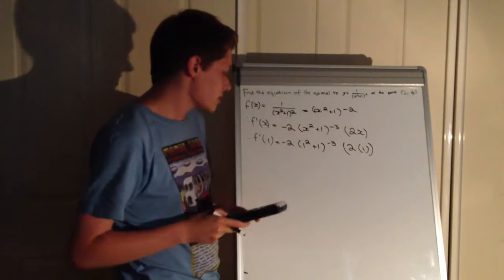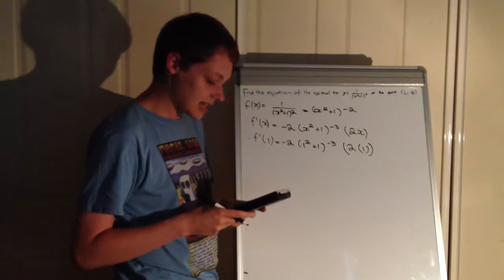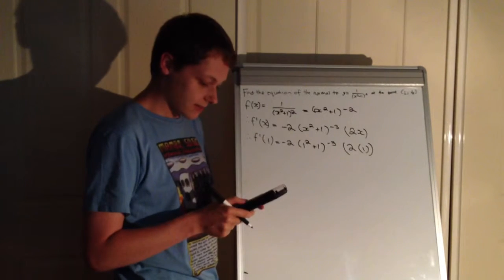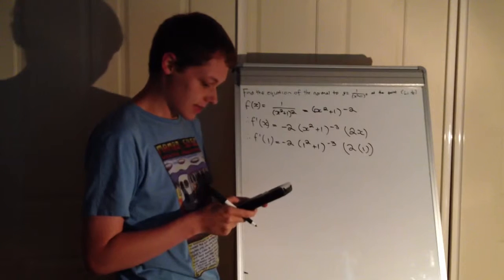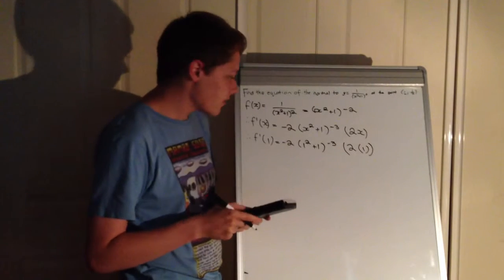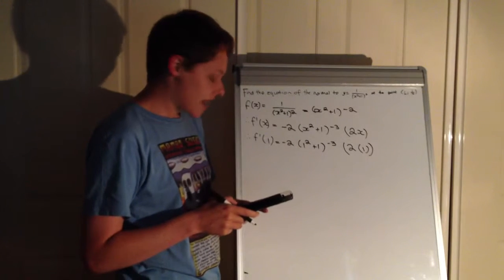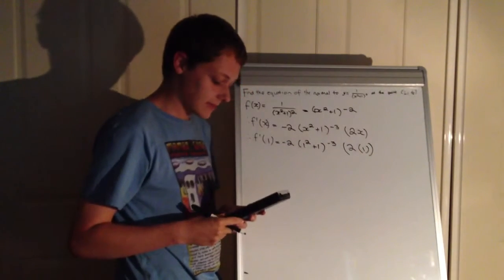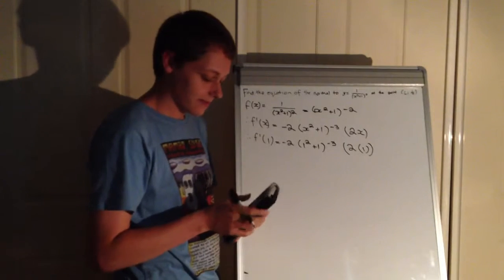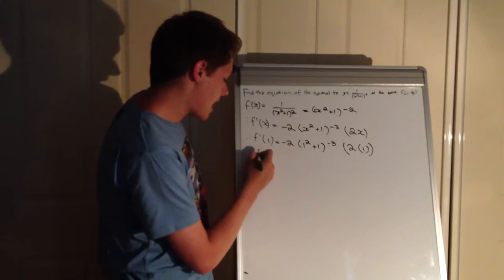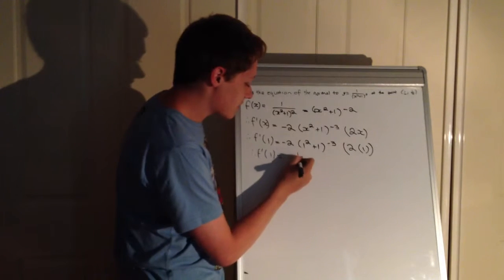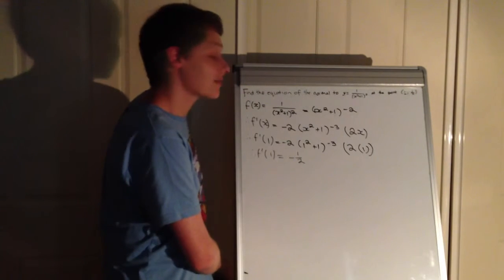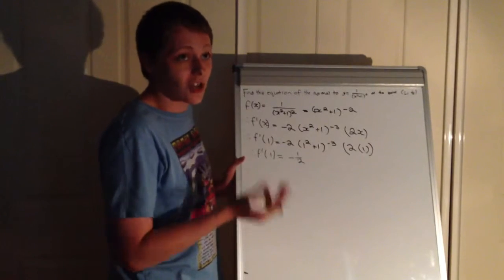So what I'd do is, if I was doing it on my calculator, I would enter (-2)((1² + 1))^(-3)(2). And it gives me -1/2. Nice and simple. So therefore f'(1) equals -1/2, or -0.5 as it showed on the calculator.